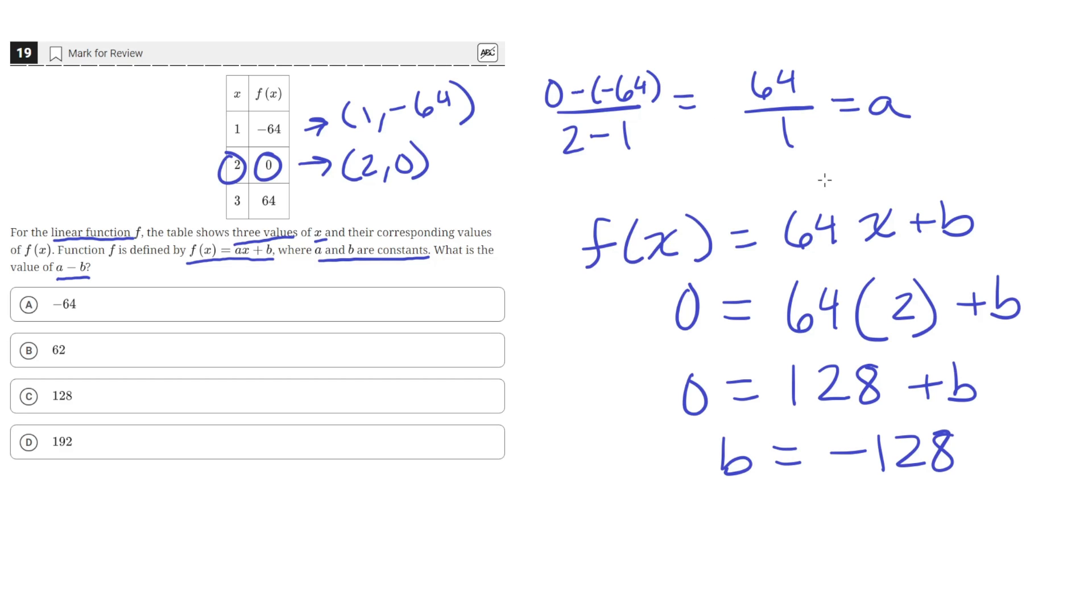So now we have the value of a and the value of b. So a, 64, minus b, negative 128, is equal to 192, which is answer choice D.